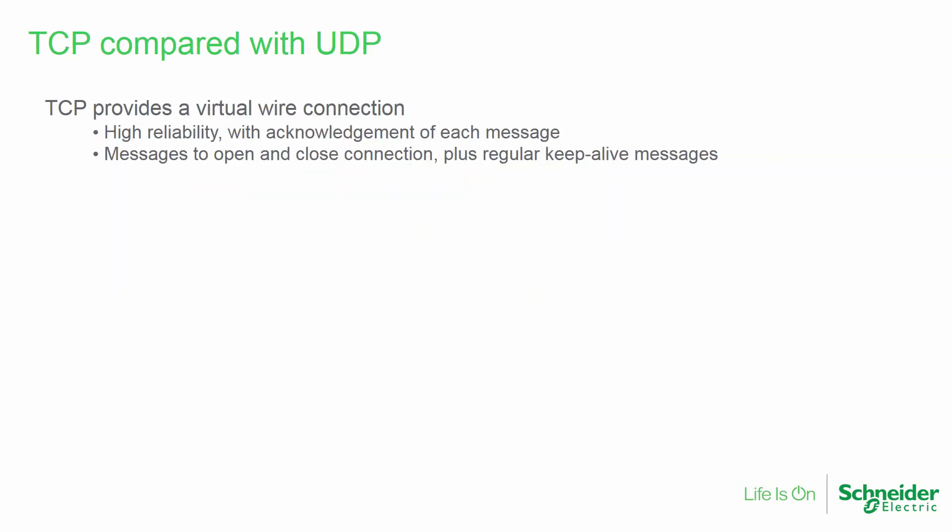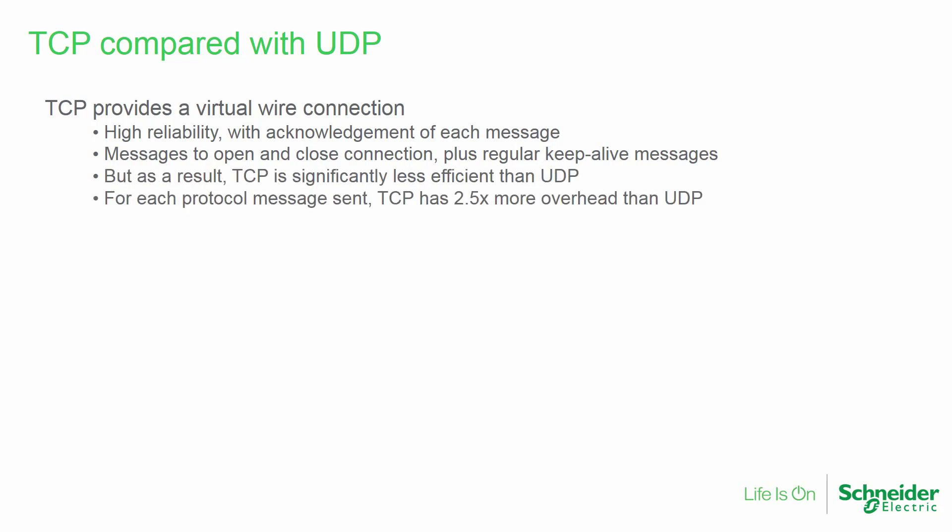The use of TCP at the transport layer is designed to create a virtual wire connection, intended to be highly reliable with acknowledgement of each message. There are messages to open and close a connection before and after sending traffic, plus regular keep-alive messages when the connection is idle. But as a result, a link using TCP will be significantly less efficient than one using UDP. For each protocol message sent, TCP has about 2.5 times more overhead than UDP.